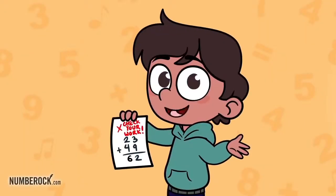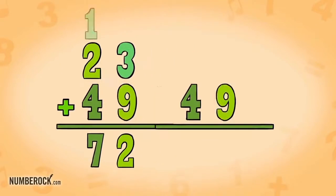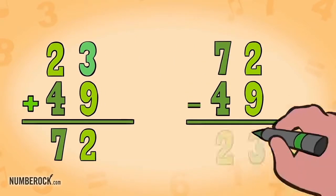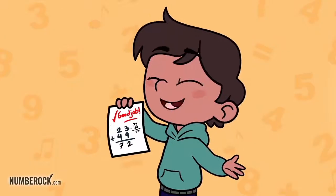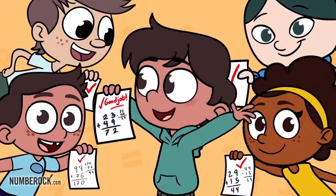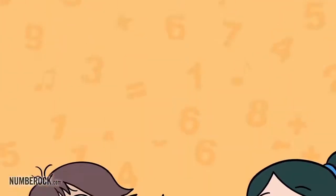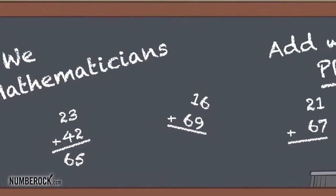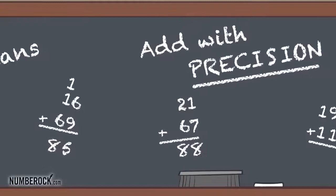Sometimes we make errors, it's inevitable, but check your work and it'll be indubitable. The best way to check your addition is by subtraction, the inverse operation. Take either addend and subtract from the sum. If you get the other addend, your work is done. When presented with a double digit problem, Number Rockers always check after we solve. We mathematicians add with precision.